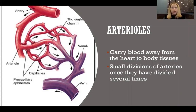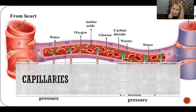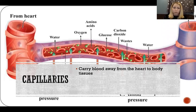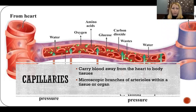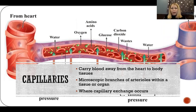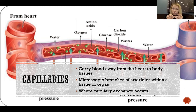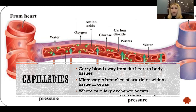Those arterioles continue to divide and get smaller and smaller until we call them capillaries. Capillaries are the very smallest vessels, and that is where capillary exchange occurs — which is why we also refer to them as exchange vessels. That's where fluid from the blood actually leaves the circulatory system out into the surrounding tissues and is taken back up again. There's no exchange in arteries or arterioles because the walls are much thicker. It's not until the capillaries, where the walls are so thin, that fluid leaks out and comes back in. Without capillaries, no exchange takes place.